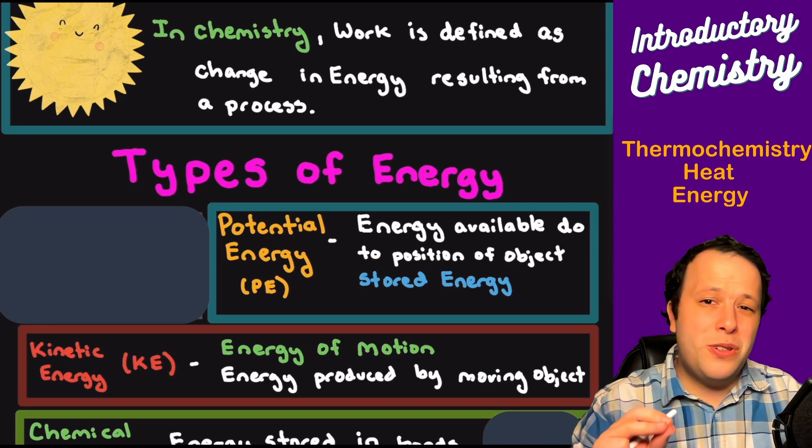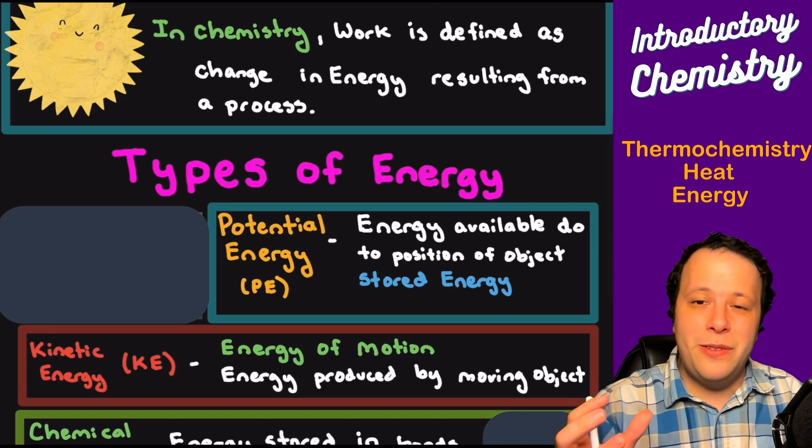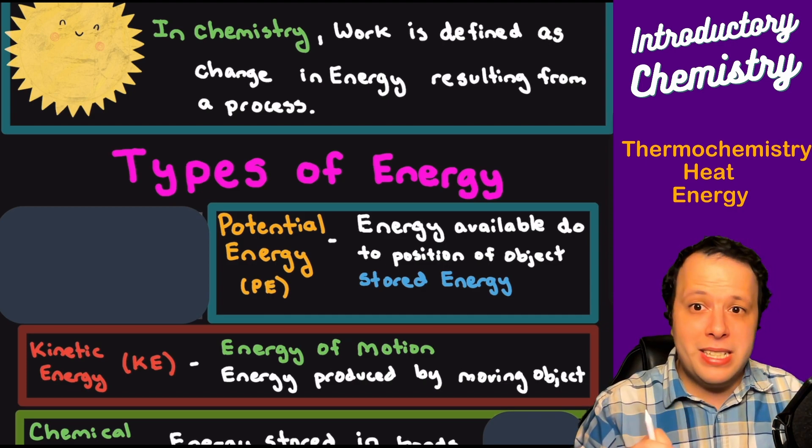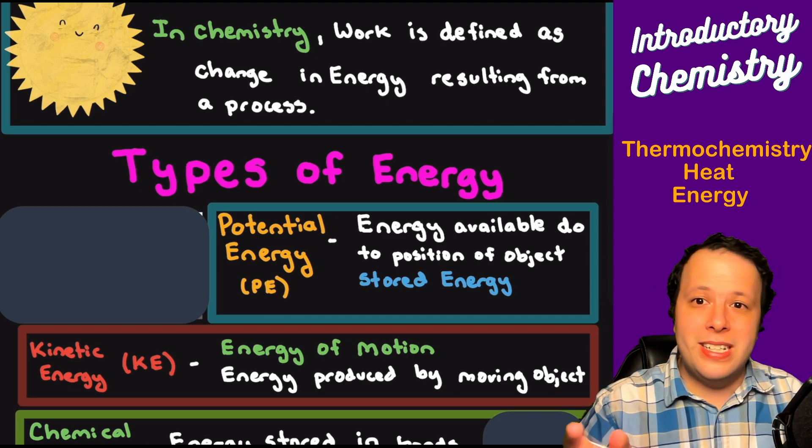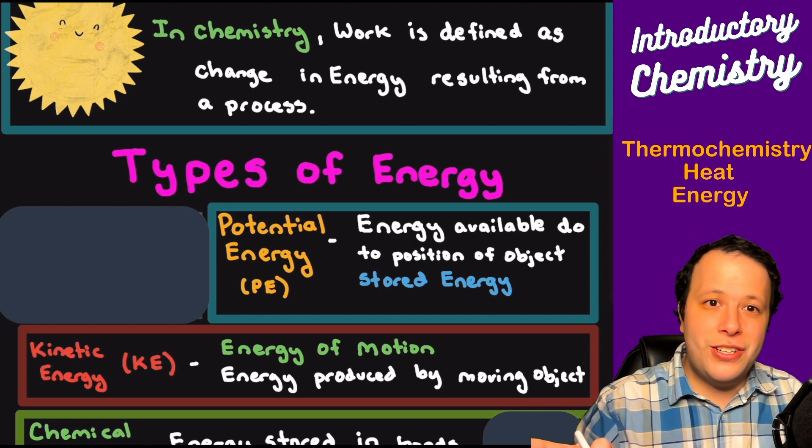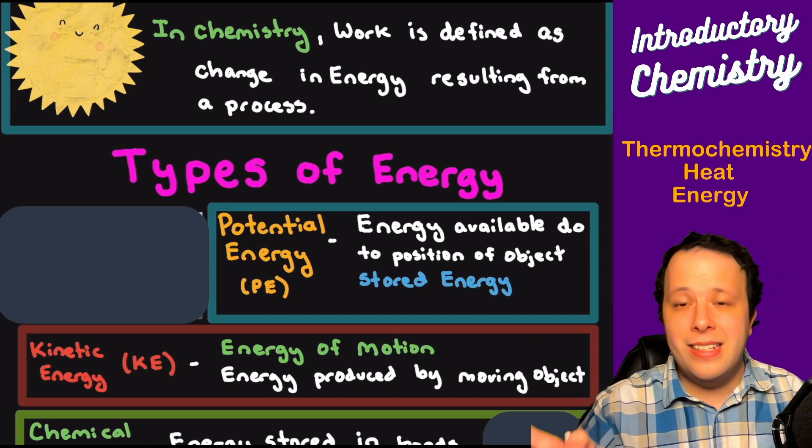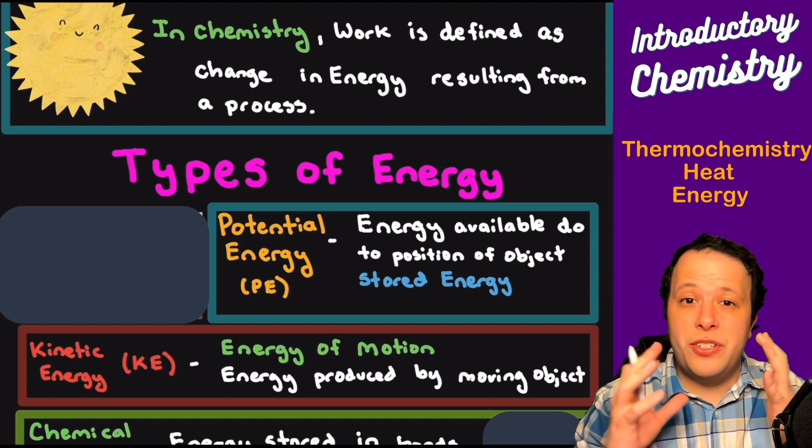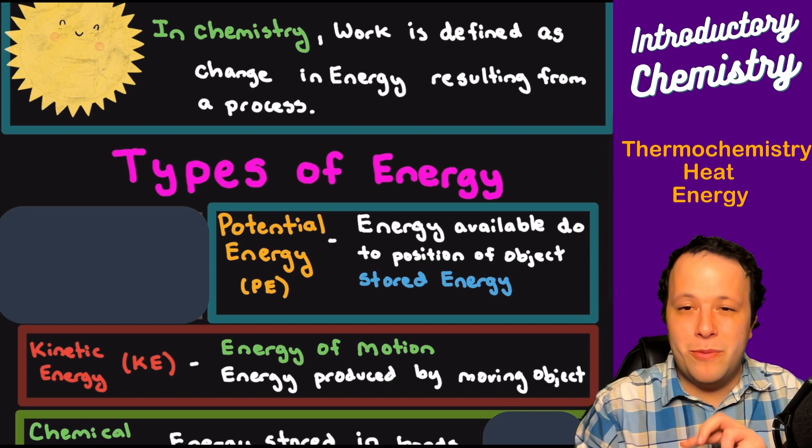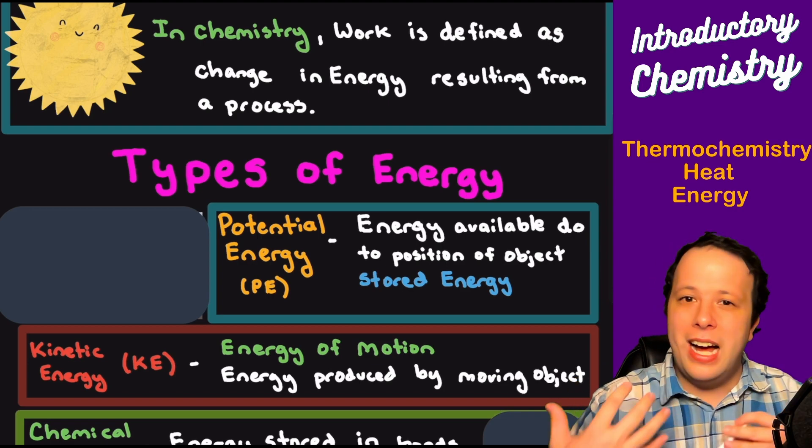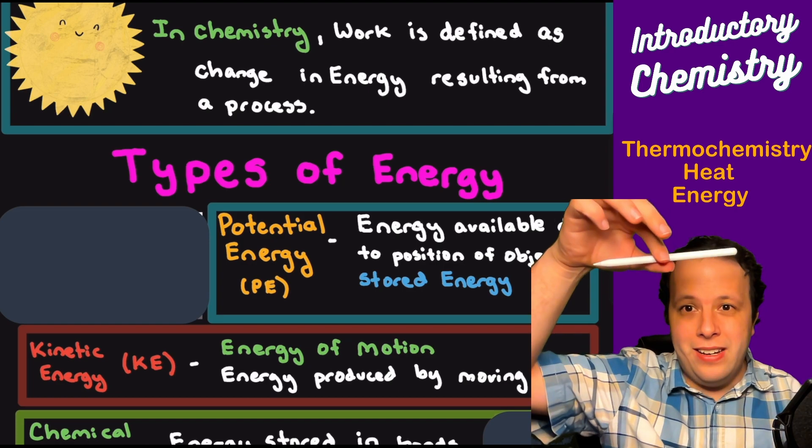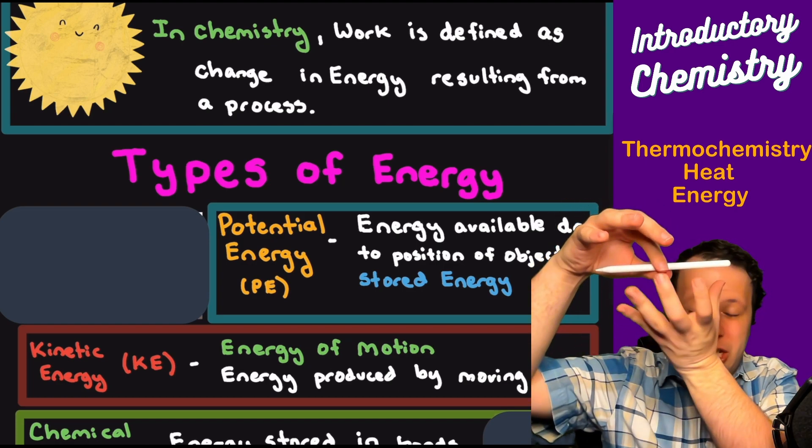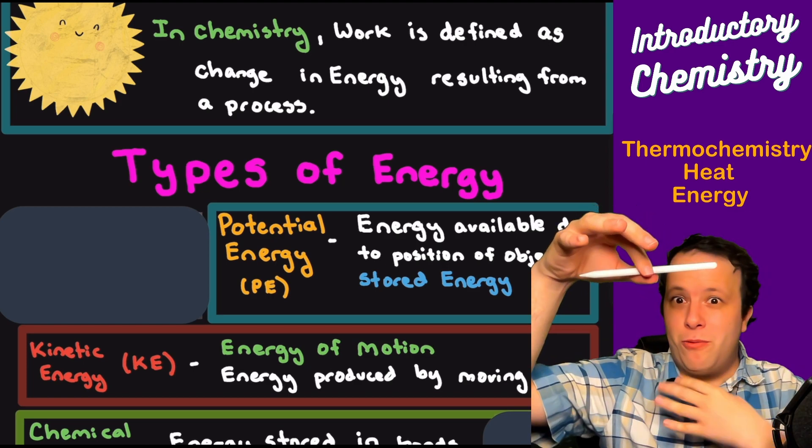The first general idea is thinking back to physical science or basic physics. You learn that total energy is essentially a conversion between potential and kinetic. Potential energy is how much energy you have stored within a system—it's all about where an object is positioned. If I had my pen up here and I'm ready to drop it, it has all the energy stored up that it could be ready to drop.